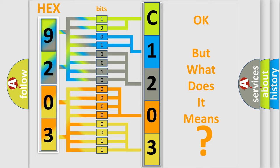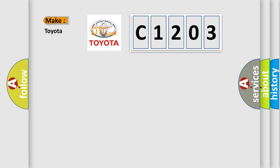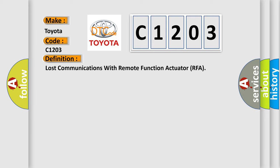So, what does the diagnostic trouble code C1203 interpret specifically for Toyota car manufacturers? The basic definition is: Lost communications with remote function actuator RFA.